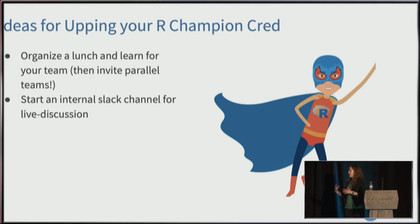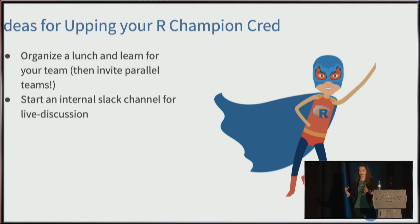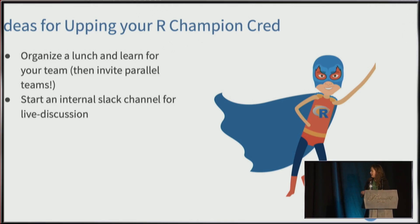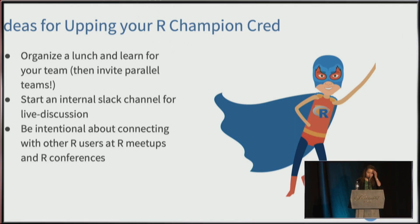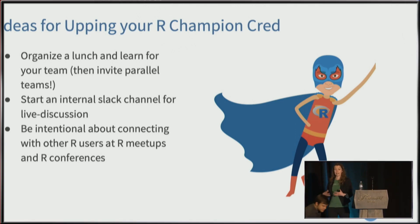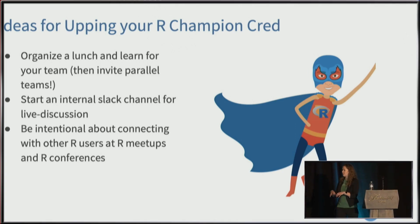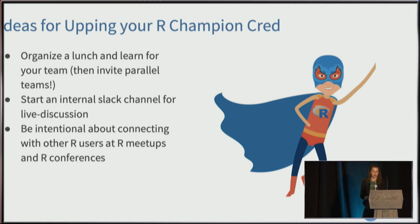I saw this be really successful in one of my accounts where there were several different branches that were all technically different orgs under one broader org. They started a Slack channel for all the different branches, and it was really successful because when someone ran into a problem with their R code, they could rely on their broader colleagues for help. Be intentional about connecting with other R users at meetups and conferences and talk about the barriers you're running into — chances are you're not alone.